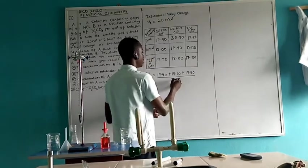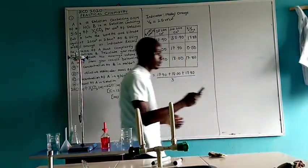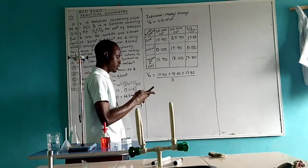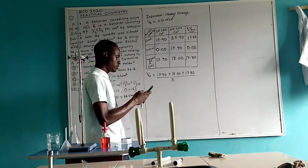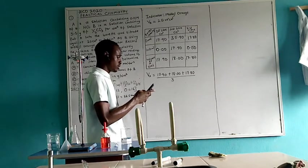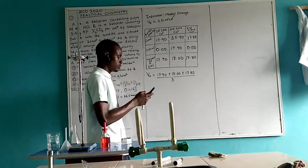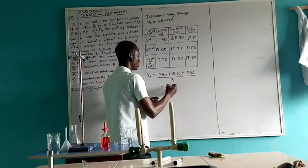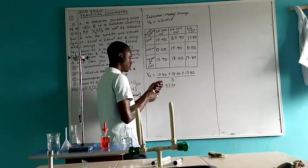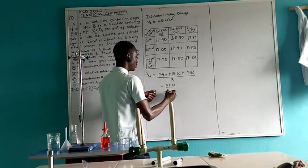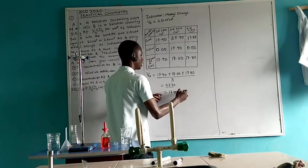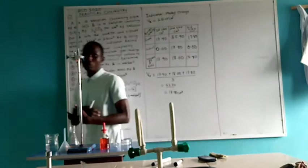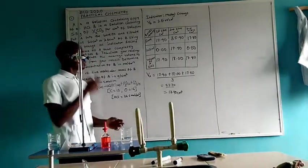That is our VA, which is 17.90 plus 18.00 plus 17.80, all divided by three. Using the calculator, that gives me 17.90 cm³. So this is the titer value, the average volume of acid required to completely neutralize 25 cm³ of the base.